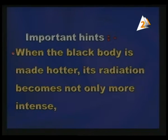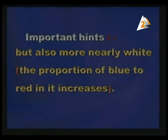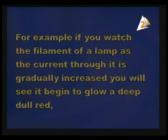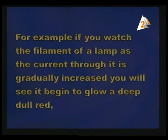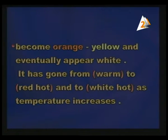When the black body is made hotter, its radiation becomes not only more intense, but also more nearly white — that proportion of blue to red in it increases. For example, if you watch the filament of a lamp and the current through it is gradually increased, you will see it begin to glow a deep dull red, then it becomes orange-yellow, and eventually appears white. It has gone from warm to red-hot and to white-hot as temperature increases.